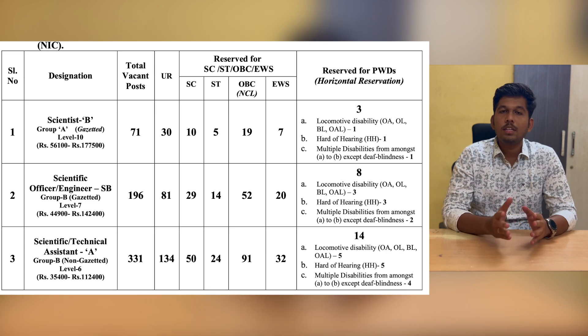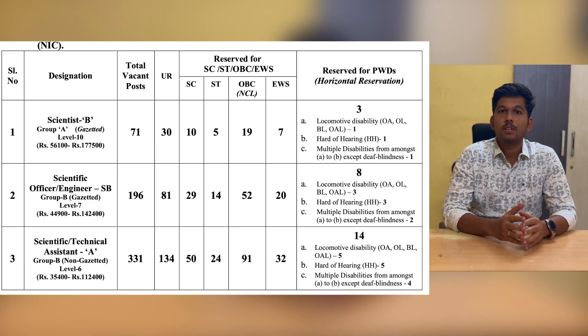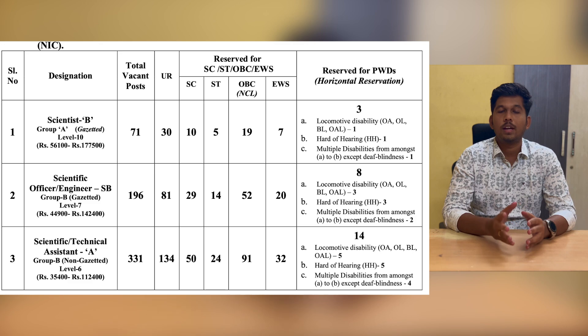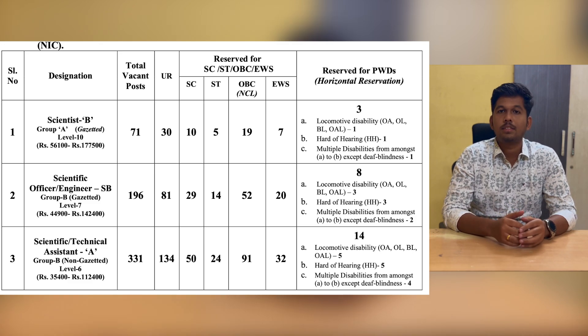For Scientist B, the released vacancy is around 71; for Scientific Officer it is around 196; and for Scientific Technical Assistant A it is 331.